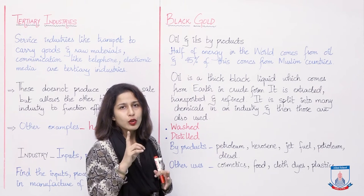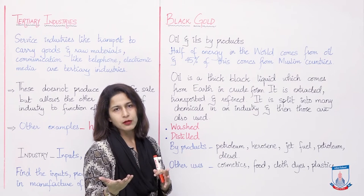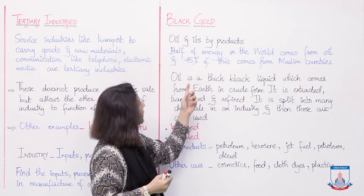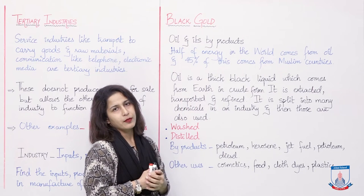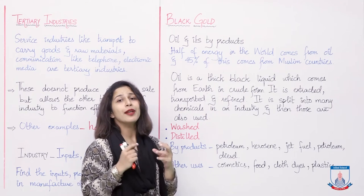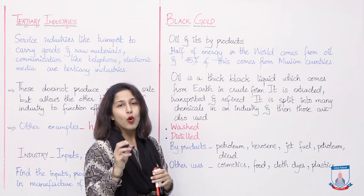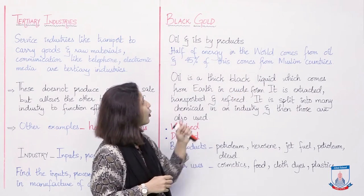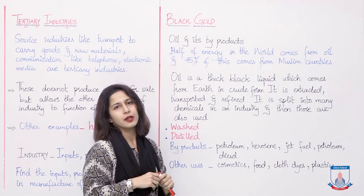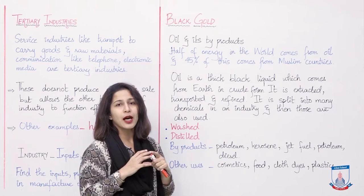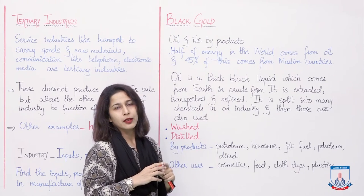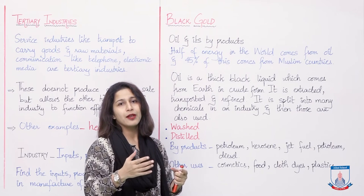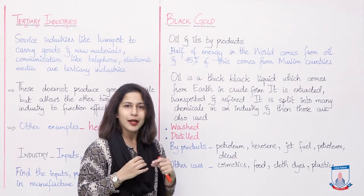If you remember, in the last lecture we discussed that mining is a primary industry, and through different methods we extract different types of minerals. Oil is one of them. Ab aap soch rahe honge maine 'black gold' kyun likha hai. Black gold is a very important term — oil is called black gold. Because half of the energy in the world comes from oil, and 45% of this comes from Muslim countries.